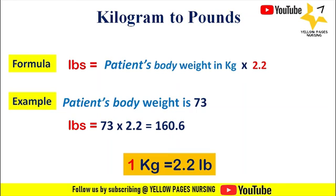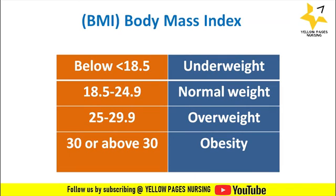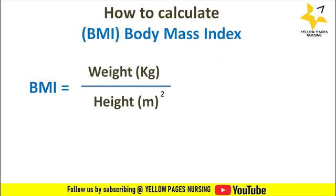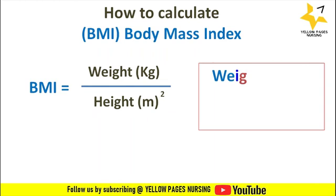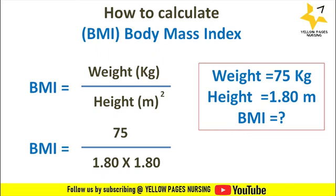Next comes body mass index. BMI is a reliable indicator of body fatness for most people, used to screen for weight categories that may lead to health problems. Below 18.5 indicates underweight; 18.5 to 24.9 is normal weight; 25 to 29.9 is overweight; 30 or above indicates obesity. The formula is: BMI = weight in kg ÷ height in meters squared. For example, weight is 75 kg and height is 1.80 m. BMI = 75 ÷ (1.80 × 1.80) = 23.15.